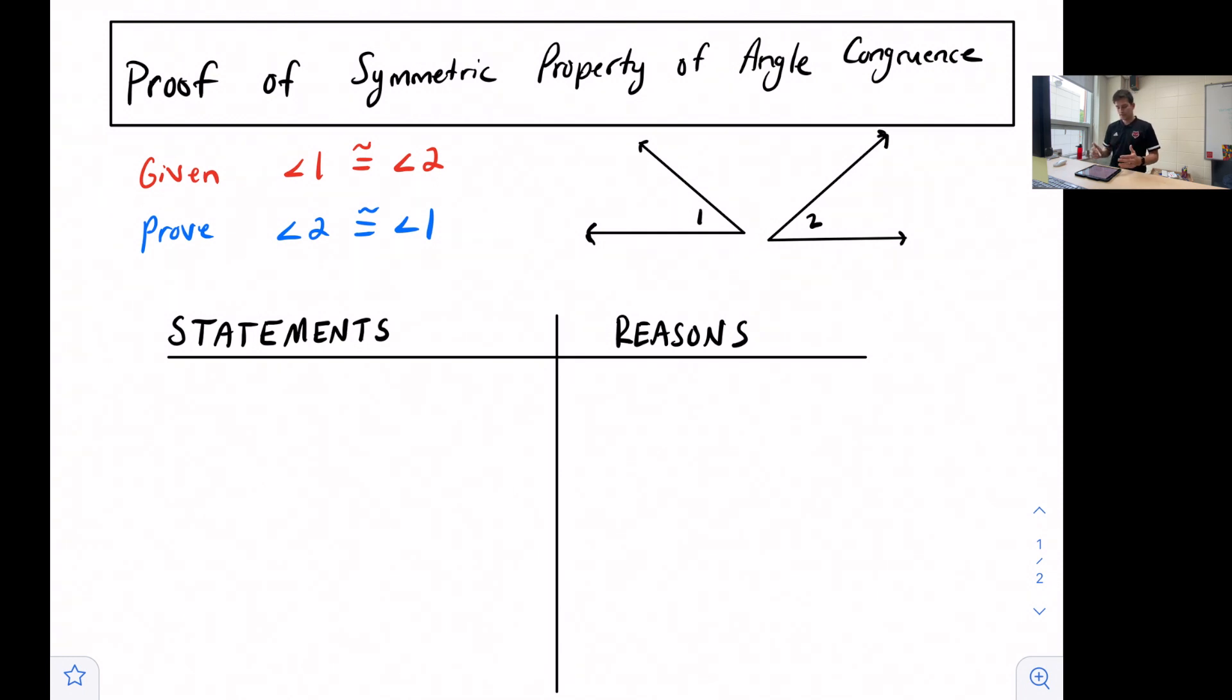When we look at our statements and reasons, this is why we call it a two-column proof—statements on one side, reasons on the other. The first statement that you want to make is always what is given to you. So statement number one: angle one is congruent to angle two. The reason we can make that statement is because it was given information.